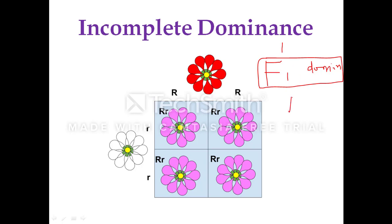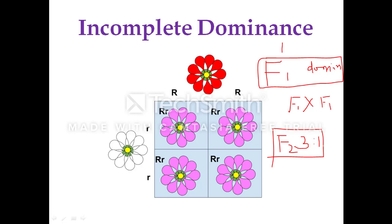In a monohybrid cross, when F1 plants are crossed with another F1 plant, in the F2 generation we get a phenotypic ratio of 3:1. But in certain conditions, the monohybrid F2 ratio will deviate from the 3:1 ratio. One such example is incomplete dominance.